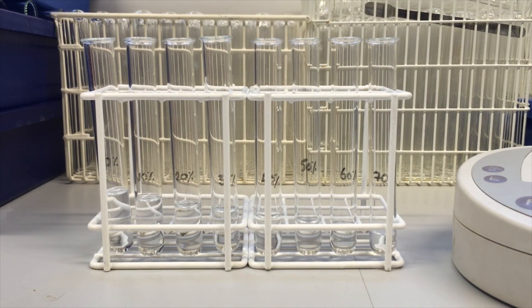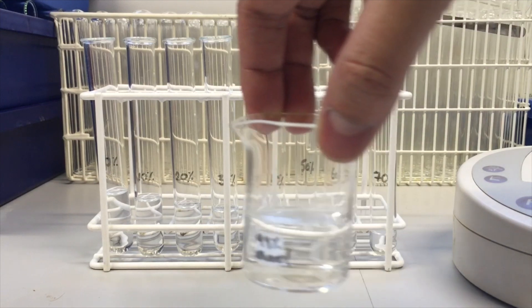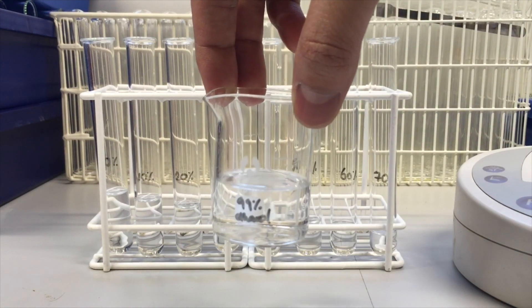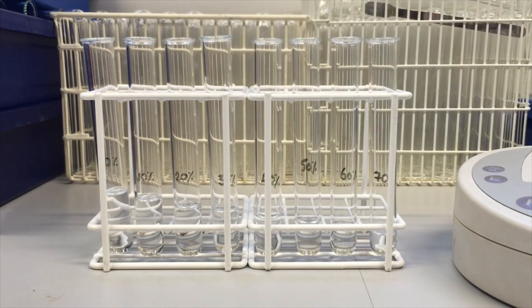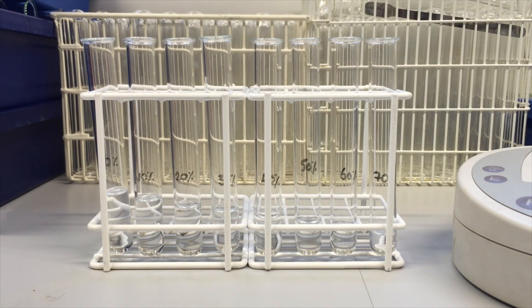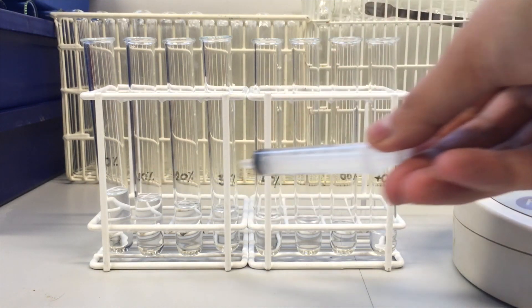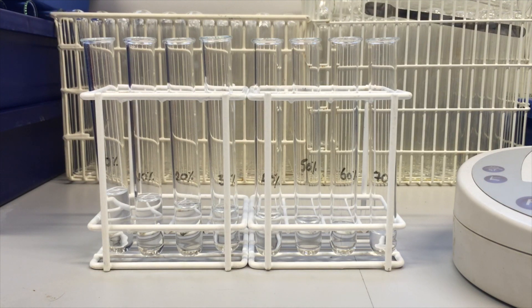So what I'm going to do now is I've got some 99% ethanol here, and what I'll be doing is adding gradually increasing volumes of this to my existing volumes of water to make it up to a final percentage of alcohol as labeled on the tubes that you can see there.